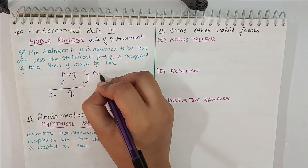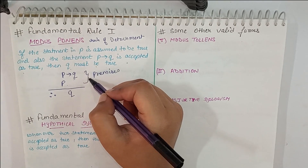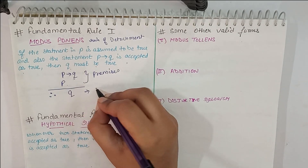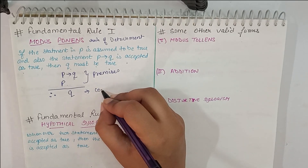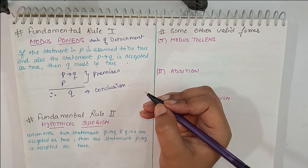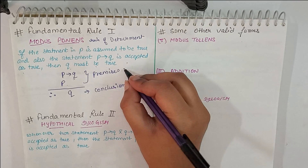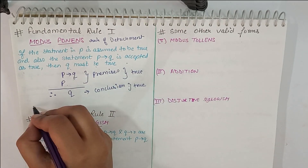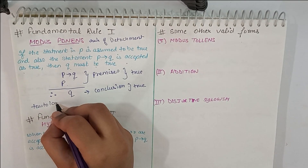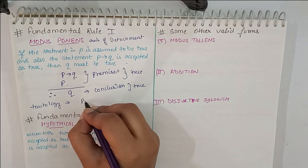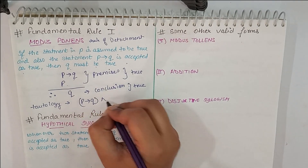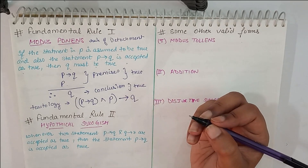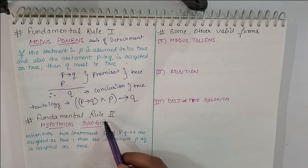All statements except the conclusion are known as premises, and the last statement is known as the conclusion. So Modus Ponens says if these premises are true then the conclusion is true. We can write: P implies Q, and P, gives conclusion Q. Similarly, we have fundamental rule number two.